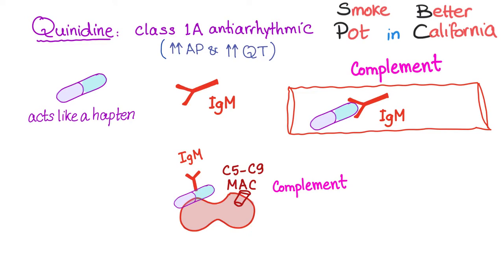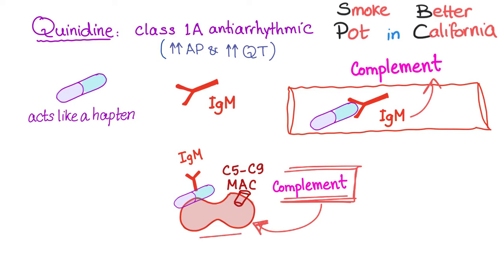Quinidine acts like a hapten. IgM recognizes it, and IgM with the drug — without the red blood cell yet — will flow inside your blood vessel. This is intravascular. Now complement gets activated because IgM can fix the complement avidly, leading to complement activation. For complement to activate, it needs a cell surface — here comes the red blood cell. Complement activates, C5 through C9, the MAC, pores into the red blood cell, disrupting the osmotic environment, leading to intravascular hemolysis. This process can be regarded as a type 3 hypersensitivity reaction, since at the initial step no cell surface was needed.